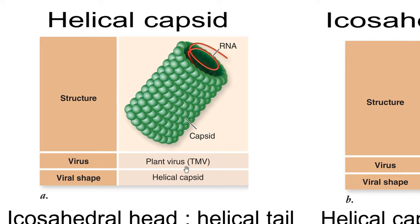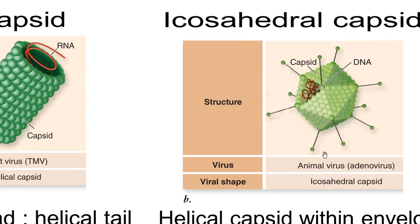An example of a helical capsid virus is the tobacco mosaic virus. Other examples include rhabdoviruses and the rabies virus, which causes rabies in humans.